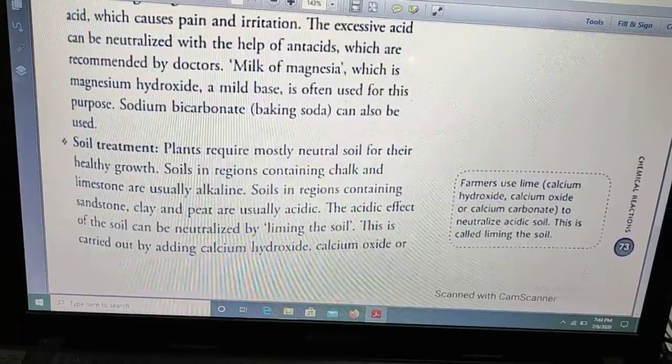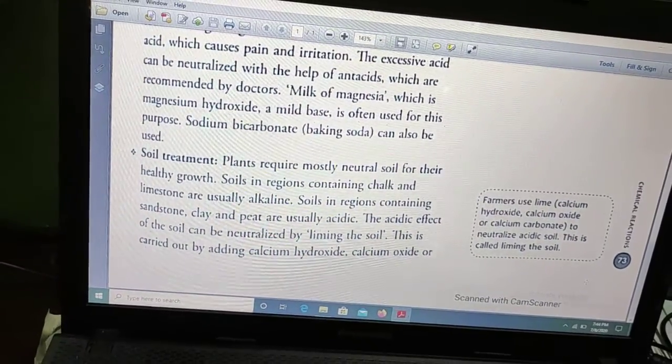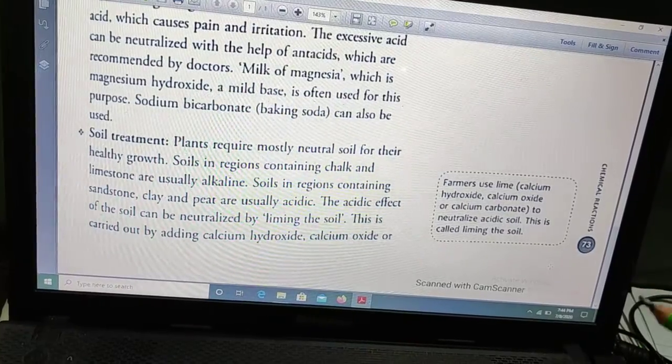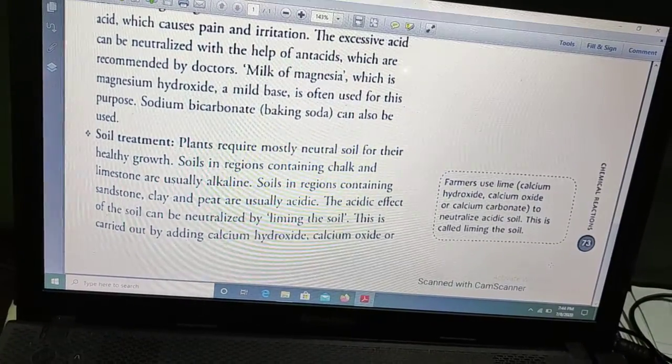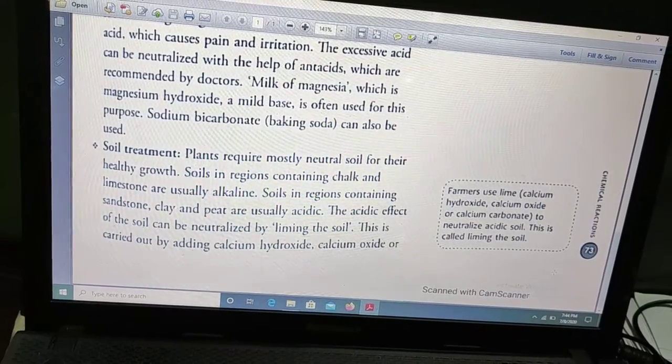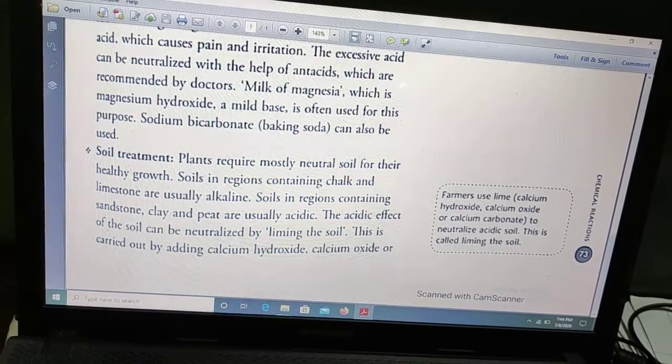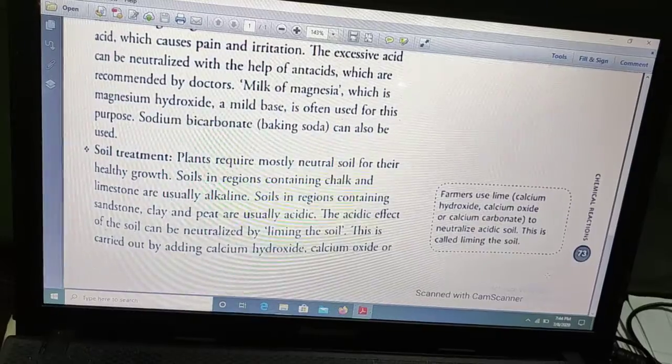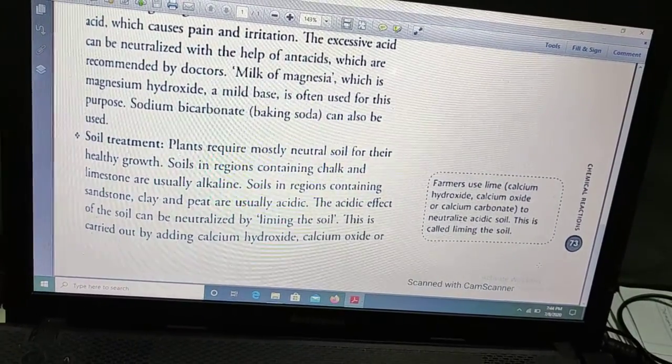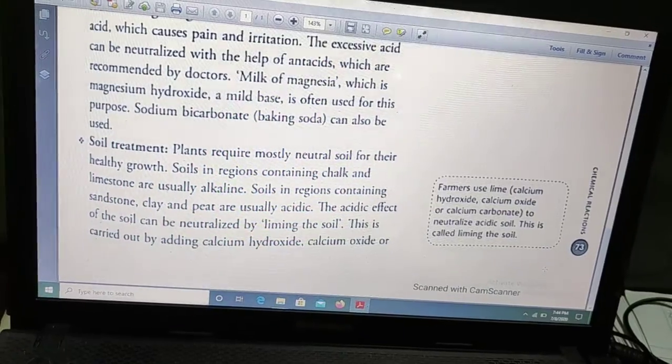The second is soil treatment. Plants require mostly neutral soil for their healthy growth. As we know, if the soil becomes too much acidic due to rain water, then the production of the crops can be decreased. So in order to maintain the neutrality of the soil...